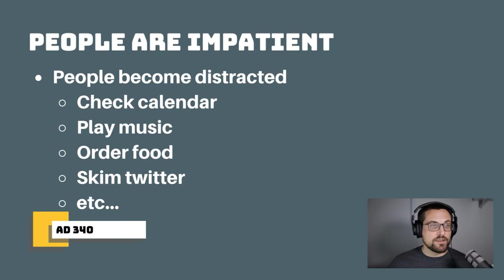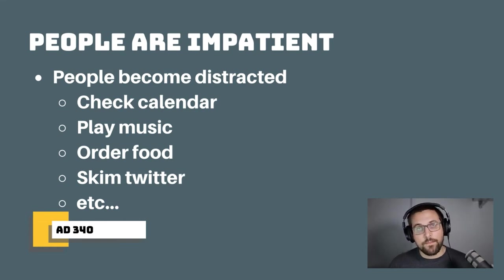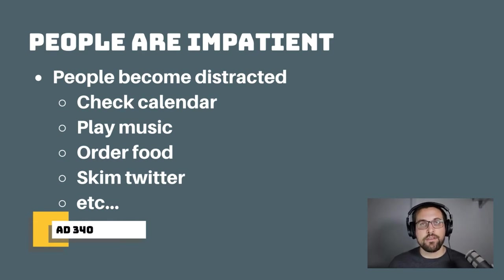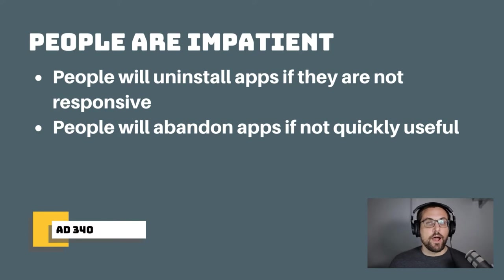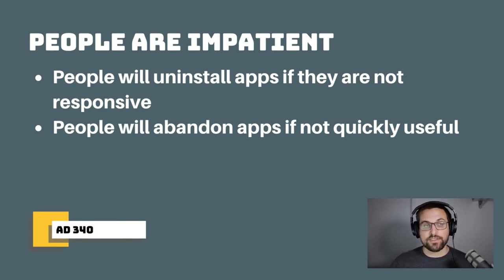We talked about the different types of things that distract people — checking a calendar, playing music, ordering food, skimming social media. All of these things mean we expect really quick, useful functionality from our apps. People will uninstall your app if it's slow or unresponsive, and people will abandon your app if they don't think it's immediately useful.